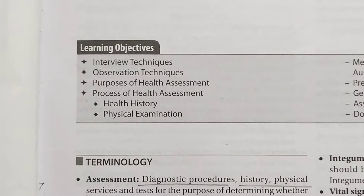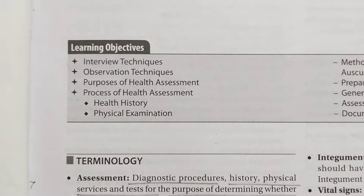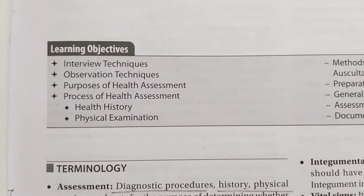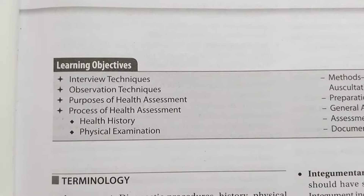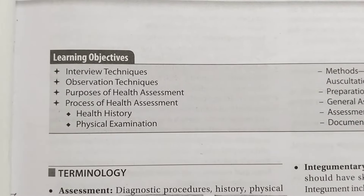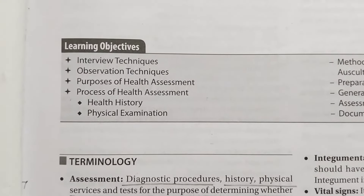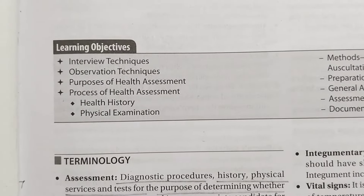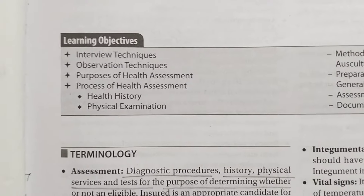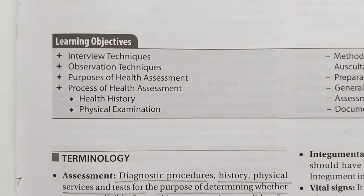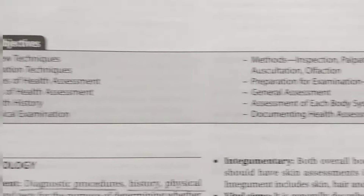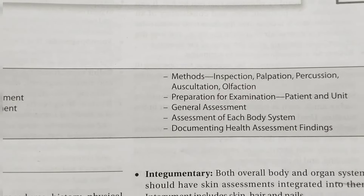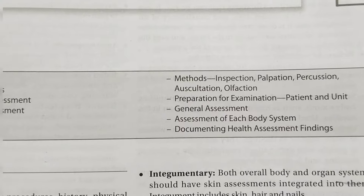We discussed the recording of interview techniques and observation techniques, and the purpose of health assessment. Now we will discuss the process of health assessment. In the process, there will be two headings: one is health history and the second is physical examination. In health history, data and headings will come under it. In physical examination, head-to-toe examination will come. If it comes to 10 marks, mention each point; if minimum 5 marks, mention the definition. Next, the methods are inspection, palpation, percussion, auscultation, and olfaction.